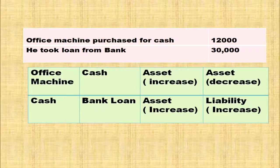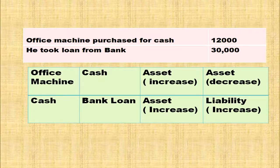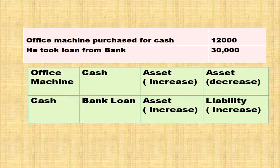Took loan from bank, Rs. 30,000. Taking a loan means cash is coming inside the business. Affected accounts: cash and bank loan. Cash is an asset — when increased, it is debited. So, cash account is debited. Bank loan being a liability is increased — rule for liability: when increased, it is credited. Cash account is debited and bank loan account is credited.